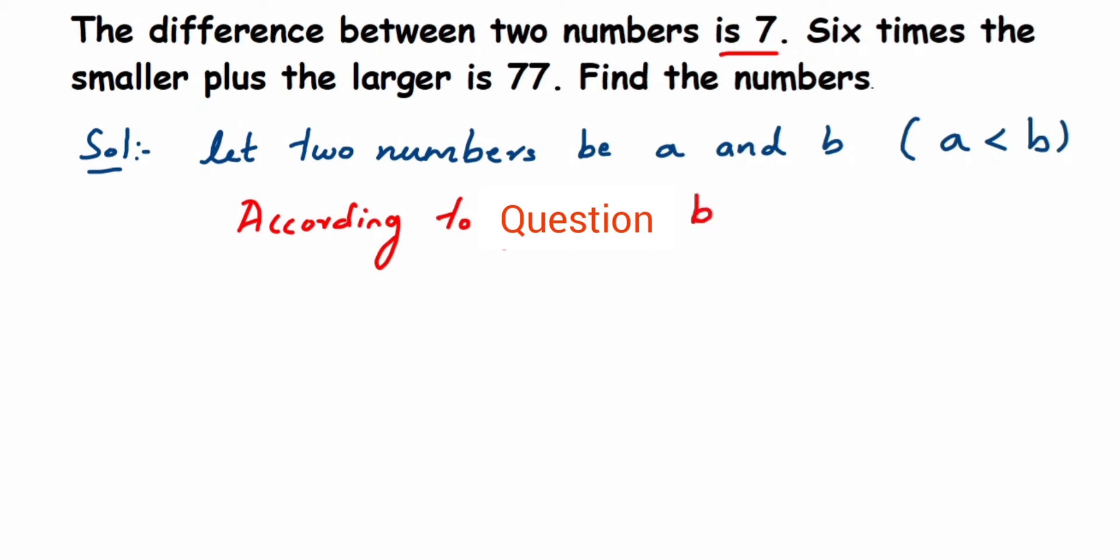So b minus a is equal to 7. And from here, I'm going to transpose a to the other side. Why we're going to do this, I'll explain in the next step. So b will become 7 plus a. Let's take it as the first equation.